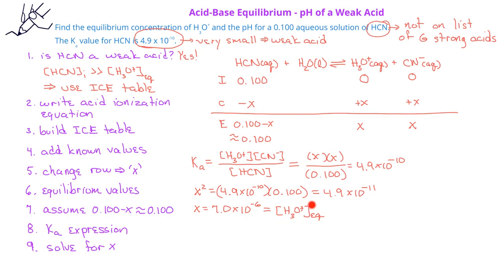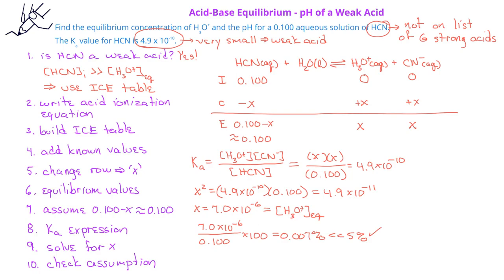This value of x is the concentration of the hydronium ion at equilibrium as we see from the ICE table. Now that we have the value of x, we can check the assumption that x is much smaller than 0.1. We do this by taking x, dividing it by 0.1, and multiplying by 100. If the result is less than 5%, the assumption is valid. In this case, 7.0 times 10 to the minus 6 divided by 0.1 times 100 gives 0.007%, which is much smaller than 5%, so we made a valid assumption.